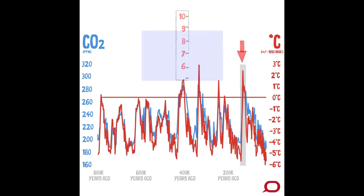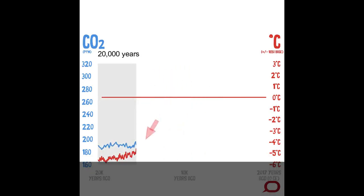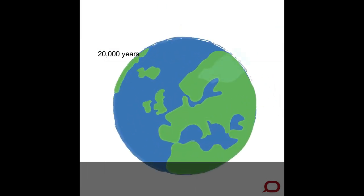At about 20,000 years ago we have the last ice age. At that time, kilometer-thick ice sheets spread across Europe and North America, eating up water and driving sea levels down to 130 meters lower than where we are today.